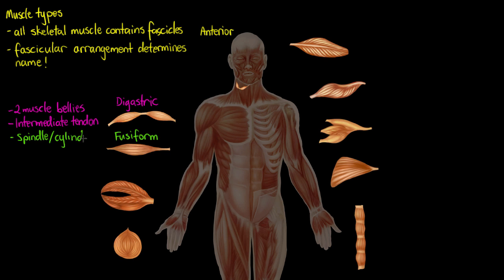Looking at our second type, we have a fusiform muscle. Fusiform muscles are spindle or cylindrical in shape and run in a straight line. A good example of this is the biceps — specifically the long head of the biceps brachii muscle.